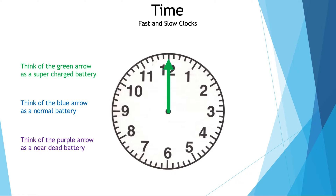Now let's talk about what the colors represent. A green arrow represents a supercharged battery, so it goes fast. A blue arrow represents a normal battery, so it goes at normal speed. A purple arrow represents a battery that is near dead.